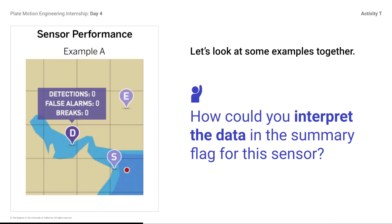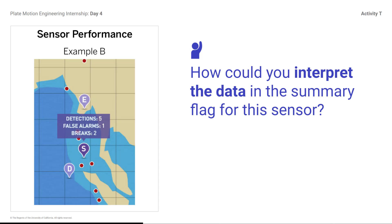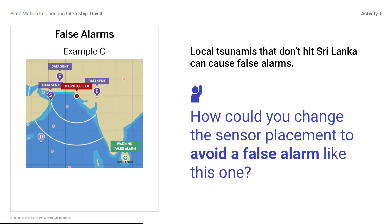Let's look at some samples together. How can you interpret the data in the summary flag for this sensor? This sensor isn't working, since it's not helping detect any earthquakes or tsunamis. It also isn't contributing to any false alarms, and since it doesn't have extra breaks, it doesn't increase the 50-year cost. In this case, it's a deep sensor placed in shallow water, so it isn't working properly and should be removed or relocated. This shallow sensor is placed in shallow water and is working because it detected five tsunamis, and one of those was a false alarm. The sensor broke from two earthquakes, so it might need to be moved. Local tsunamis that don't hit Sri Lanka can cause false alarms — you could remove one or more sensors, or move the shallow water sensor further away beyond where the local tsunami wave reaches.